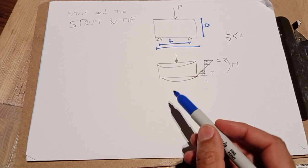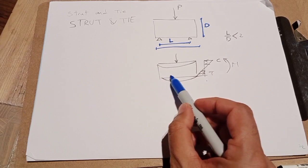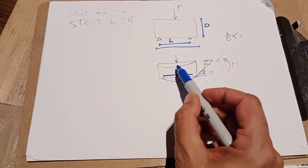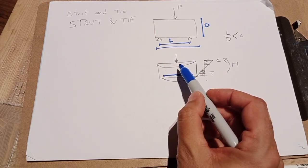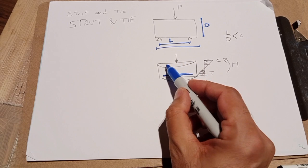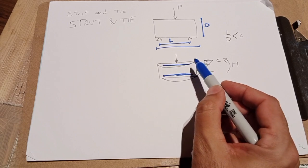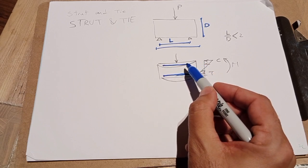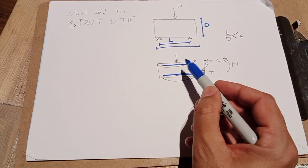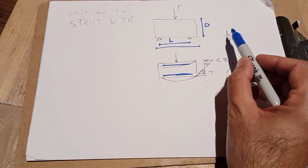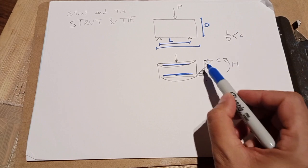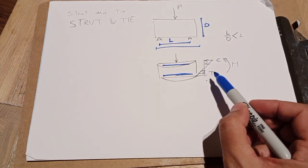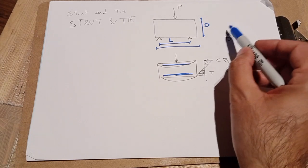For a reinforced concrete structure, we apply reinforcement at the bottom side to take any tension, and for the top side we use concrete to take the compression load. If that's not enough, we add some reinforcement in compression. But when the ratio of L to D goes under 2, bending does not happen very easily — in simple terms, the beam behaves differently.